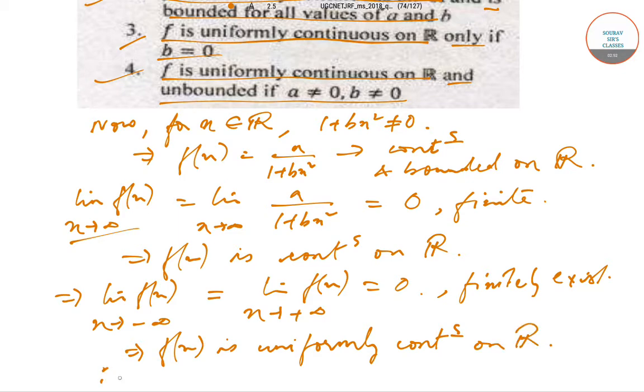Therefore, options 1 and 2 are correct. Options 3 and 4 say that f is uniformly continuous on R only if b = 0, and f is uniformly continuous on R and unbounded if a ≠ 0, b ≠ 0.